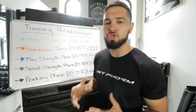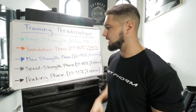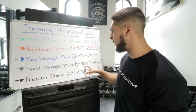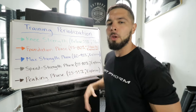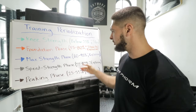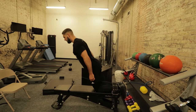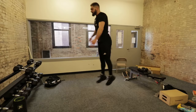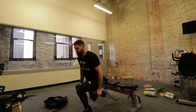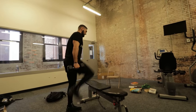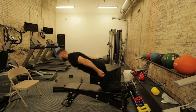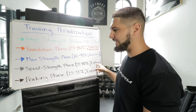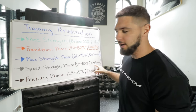After building maximum strength, we enter the speed strength phase, where we convert strength into speed and explosiveness. This uses 55 to 80% of your one rep max — the same range as the foundation phase — but now we do more explosive movements. Instead of general strength accessory work, we do more weighted sled pulls, plyometrics, explosive weighted Bulgarian split squat jumps, and speed strength exercises. This phase is four weeks long of pure speed strength and explosiveness.